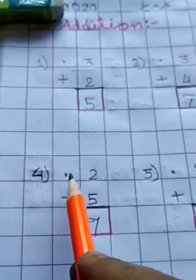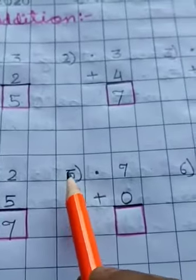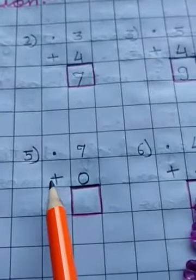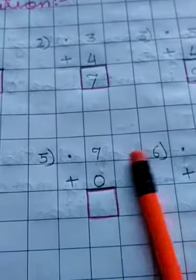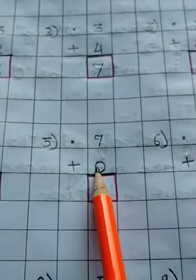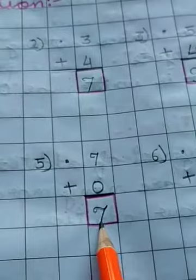Now in this line, again leave this box. Write 5 here. Put a dot. Then 7 plus 0. What is the meaning of 0? 0 means nothing. So your answer is the number itself, which is 7.